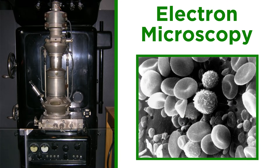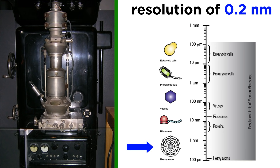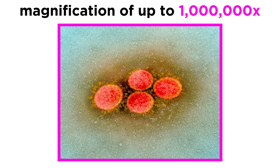Fortunately, electron microscopy, developed in the 1930s and 40s, proved to be much more powerful and allowed scientists to view these smaller structures. Some electron microscopy techniques employ a resolution of 0.2 nanometers, which is more than 1,000 times better than light microscopy. With this higher resolution, electron microscopes are able to magnify their specimen up to one million times their original size, allowing researchers to study proteins inside of cells and the molecular structure of viruses, all of which led to a better understanding of the microscopic world.